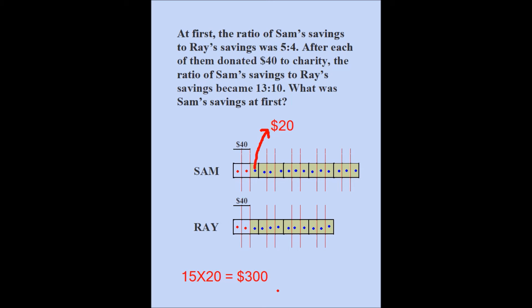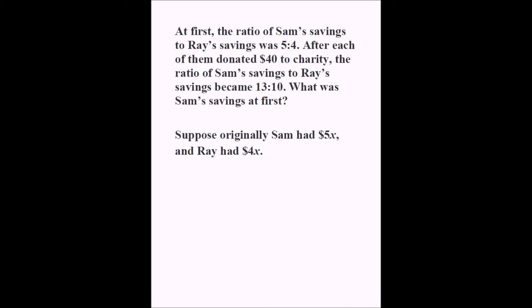We're going to solve this problem algebraically, and then I'll let you compare which method you prefer. Since the original ratio of Sam's savings to Ray's savings was 5 to 4, I'm going to assume Sam had 5x dollars and Ray had 4x dollars. I can do that because that's how ratios are defined — 5x to 4x is the same as 5 to 4. If I know what x is, I can find exactly what Sam's and Ray's original amounts were.